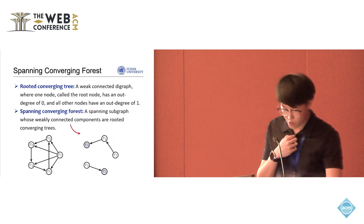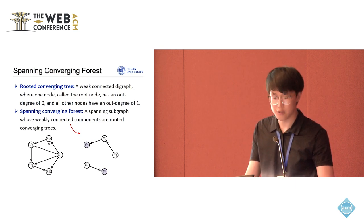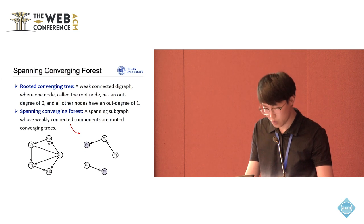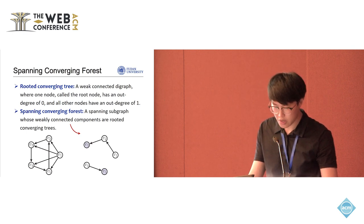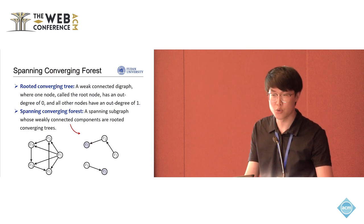We first briefly introduce the concepts of rooted converging tree and spanning converging forests. Rooted converging tree is a weakly-connected graph, where one node, called the root node, has an out-degree of 0, and all other nodes have an out-degree of 1.